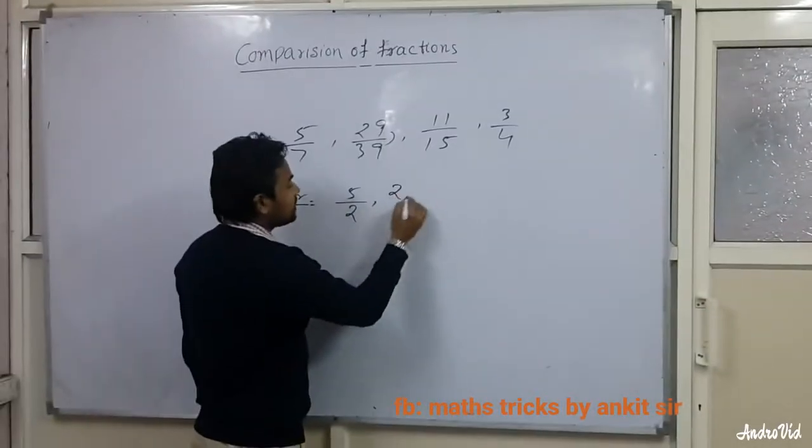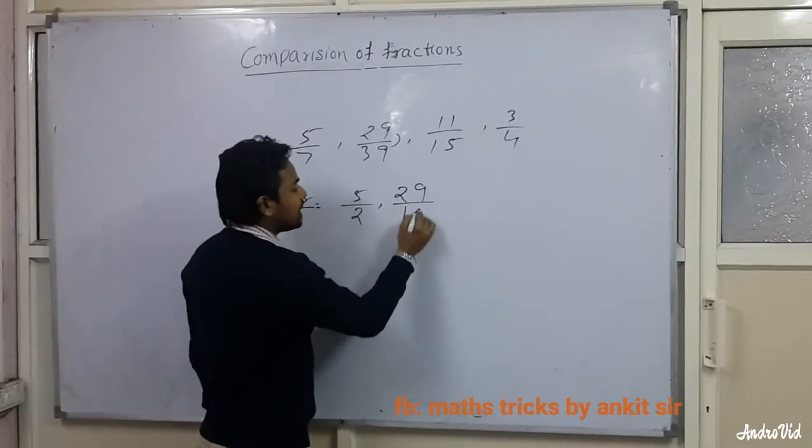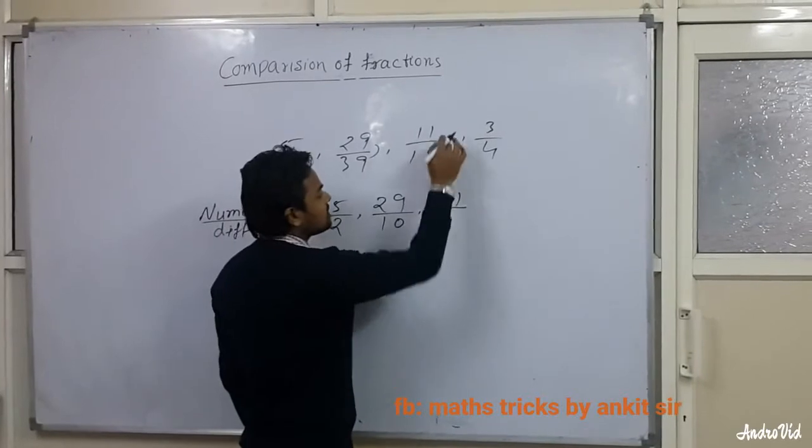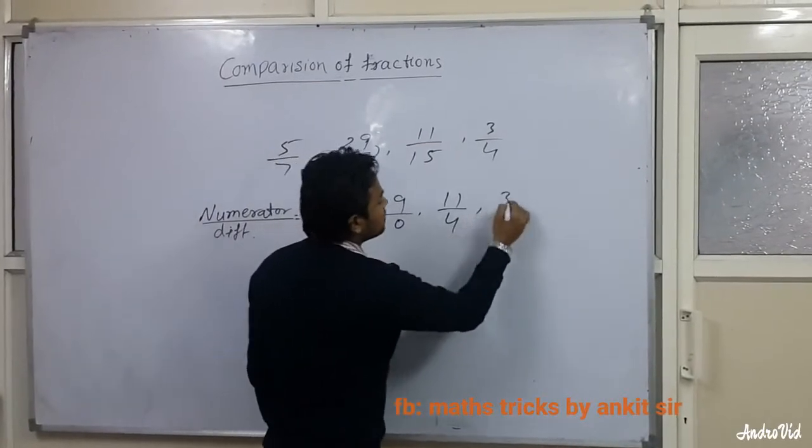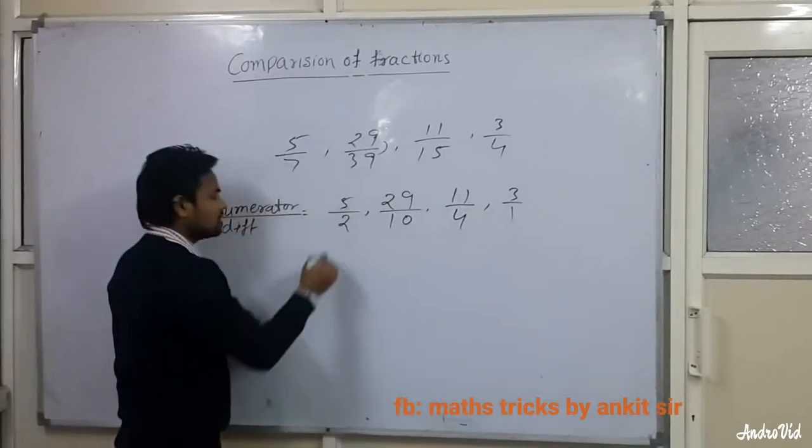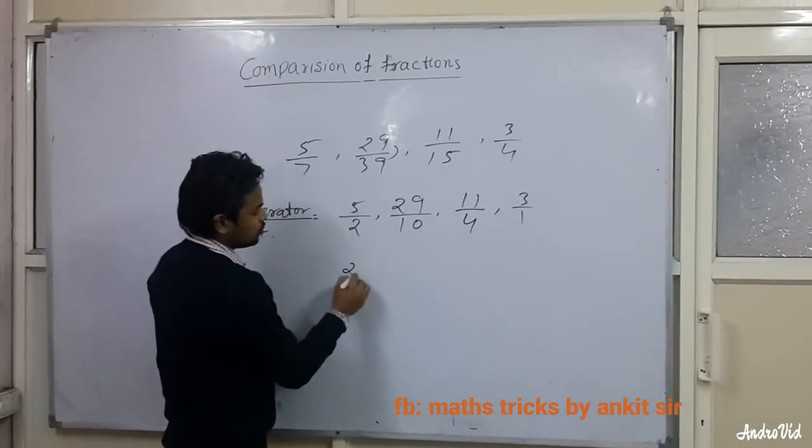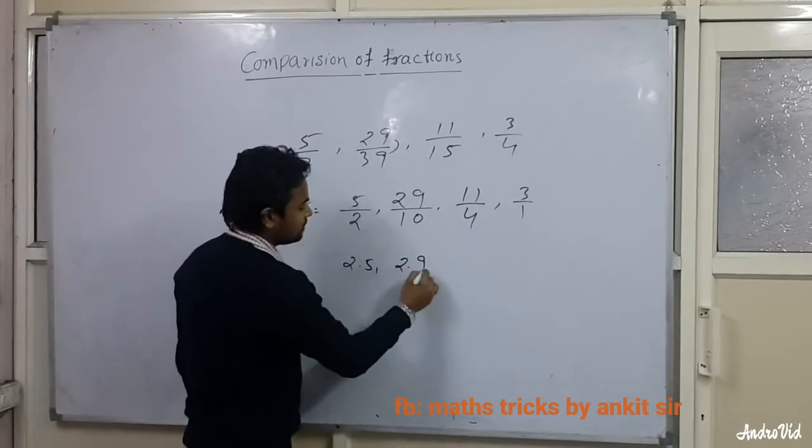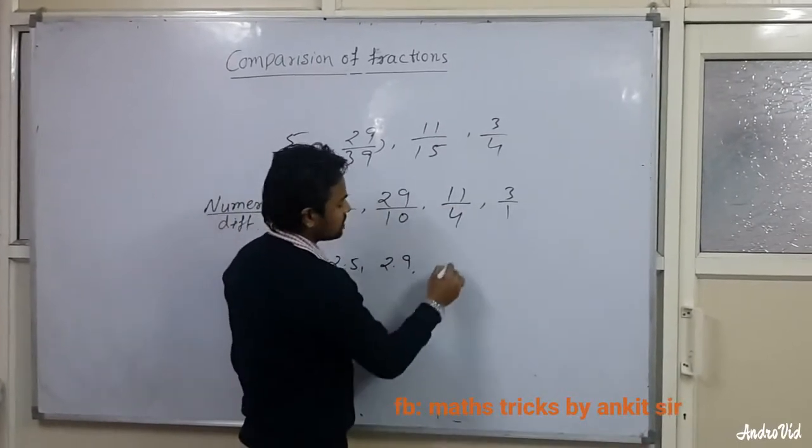5 upon 2 is 2.5, 29 upon 10 is 2.9, and 11 upon 4 is 2.75, but we take 2.7 only, and this is 3. These are the compared values.